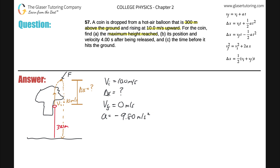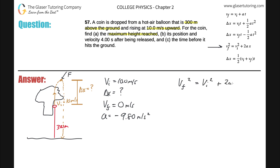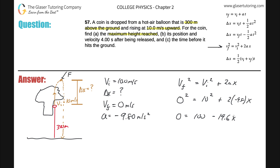Now I need to figure out the displacement. Looking through the kinematic formulas, I need one equation where I know all variables except one. Looking at equation number four: I know the final velocity, the initial velocity, and the acceleration - but not time. The displacement is what I want. So I plug in: final velocity = 0, initial velocity = 10, acceleration = -9.8, and multiply by the displacement. This works out to 100 minus 19.6 times displacement.